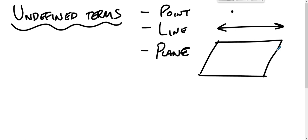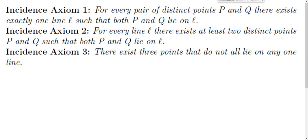We also don't talk about what it means to lie on. So when we get to these incidence axioms, these are the three rules that we're going to use to build our incidence geometry. We talk about points lying on lines.